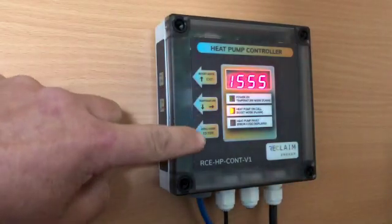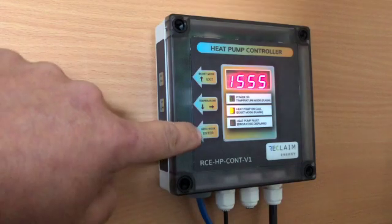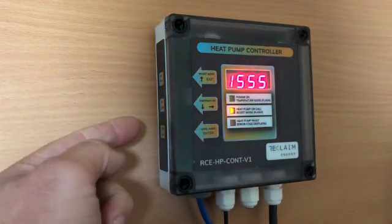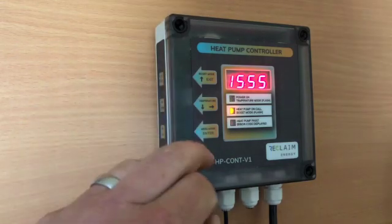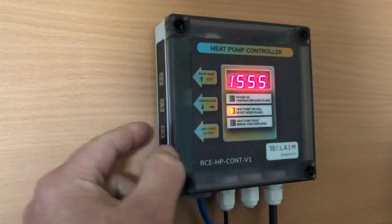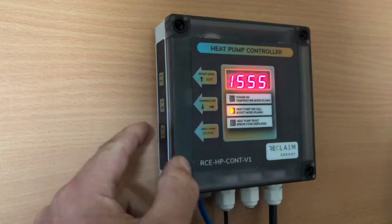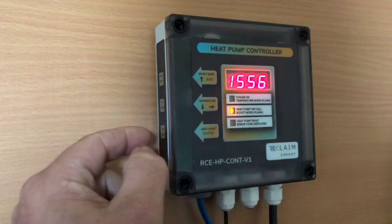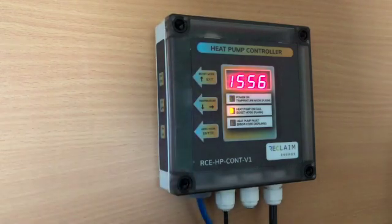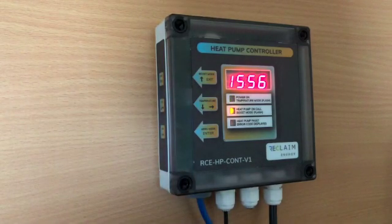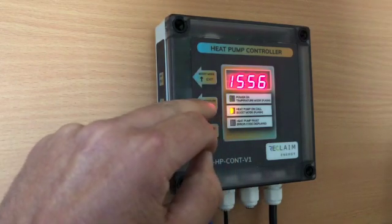You'll see on the left hand side here, we've got three arrows starting at the bottom. Now what they are doing is they're pointing to buttons on the side. The first one is the menu mode. So that's how we get into the menu. And it's also our enter button. So as we go through and change settings, that's the button we use to basically say yes, I want that setting.